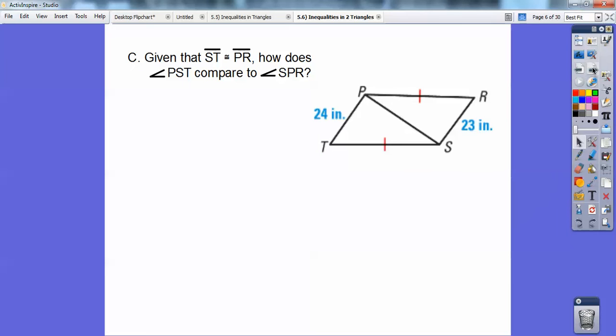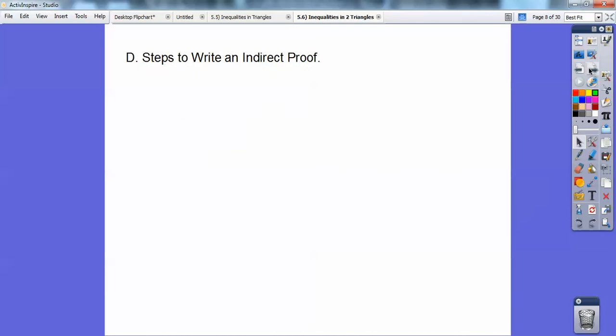So, given that segment ST is congruent to PR, how does angle PST compare to angle SPR? Here I have these two sides equal. Remember the reflexive property? I'm going to strike that guy in there because PS equals PS on both of this, and since this side is bigger than this side, that means this angle right here is going to be bigger than that angle right there. So there you go. Isn't that fun? Heck yeah.